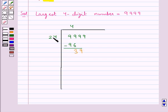24 times 1 is 24. We subtract these numbers and get 15. Bringing down the next 9, we have 159. 24 times 6 is 144. Subtracting these, we get a remainder of 15.